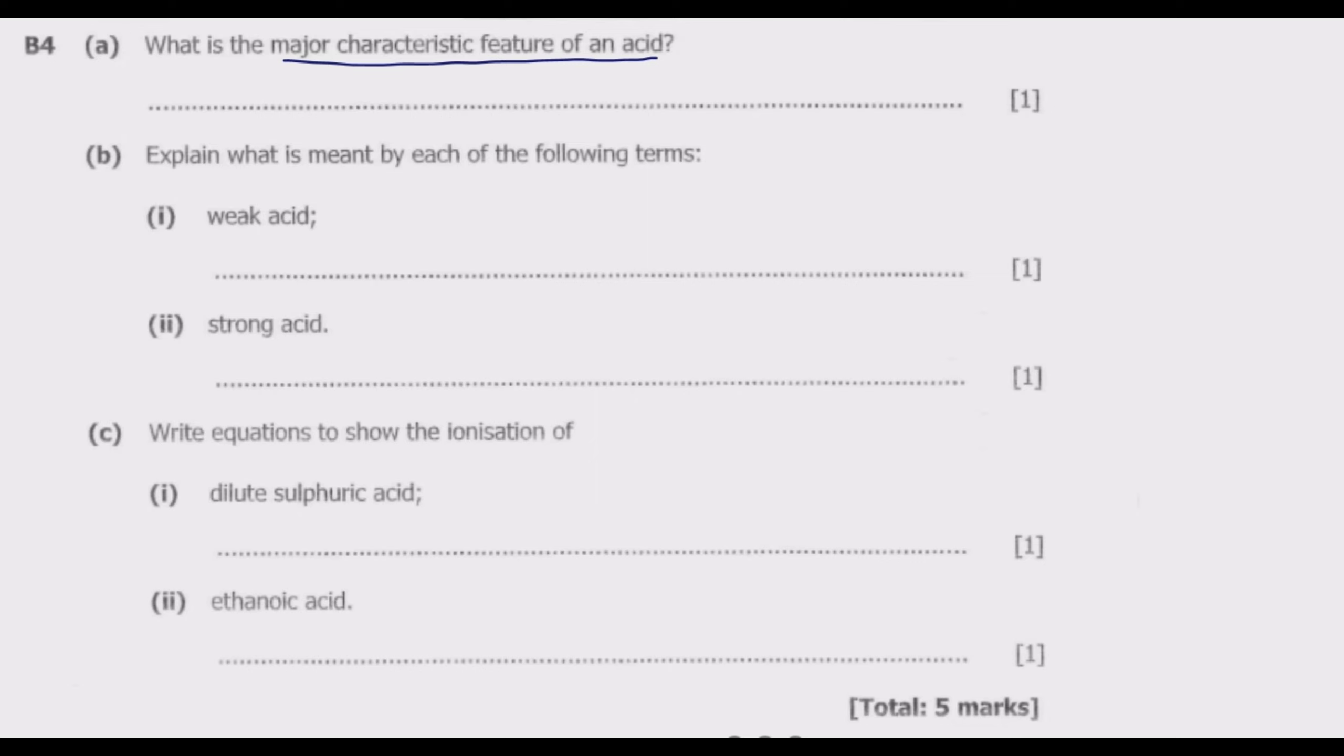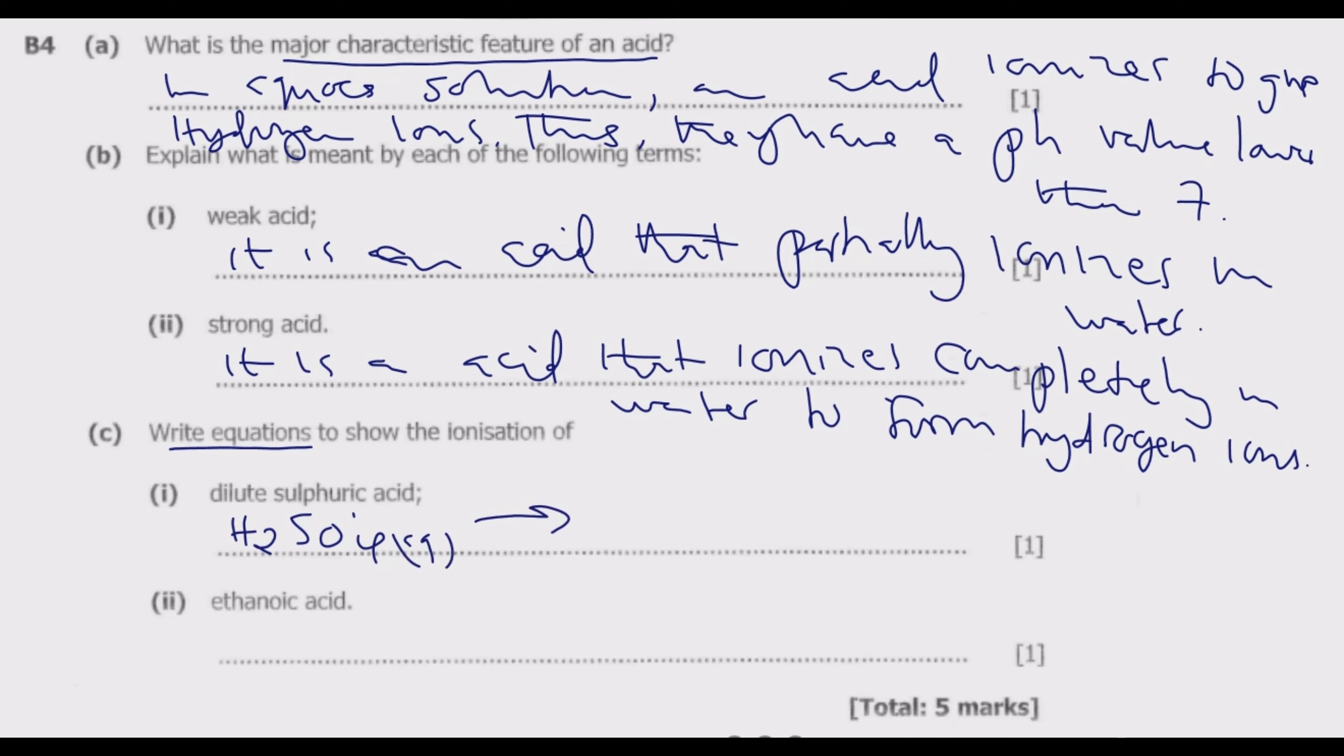We look at question C: Write equations to show the ionization of dilute sulfuric acid. Sulfuric acid is given by H2SO4. In the aqueous stage, it ionizes to hydrogen ions—since there are two hydrogens, we have a 2 in front—plus the sulfate ion SO4^2- in the aqueous state.